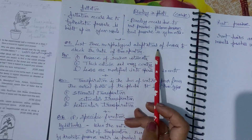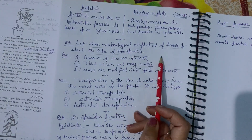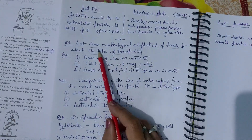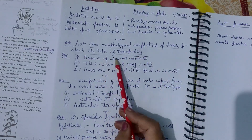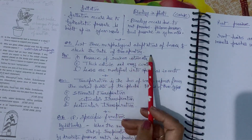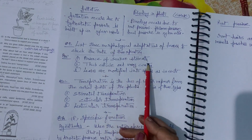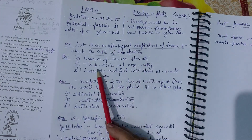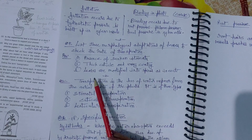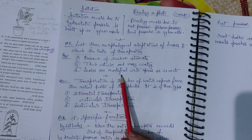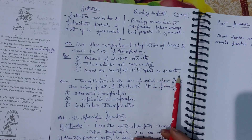List three morphological adaptations in leaves to check the rate of transpiration: first, presence of sunken stomata; second, thick cuticle and waxy coating; third, leaves are modified into spines, as in cacti.